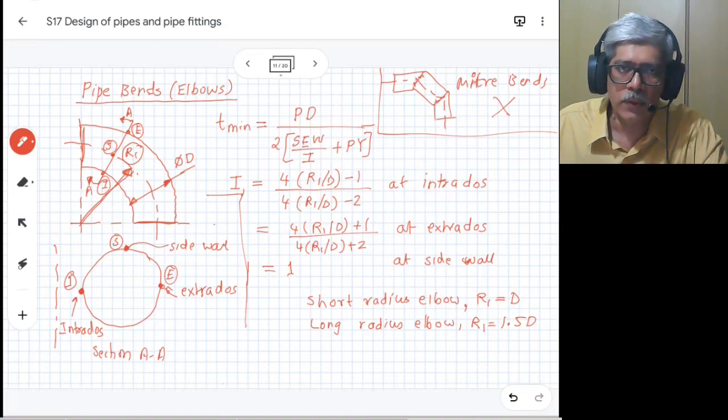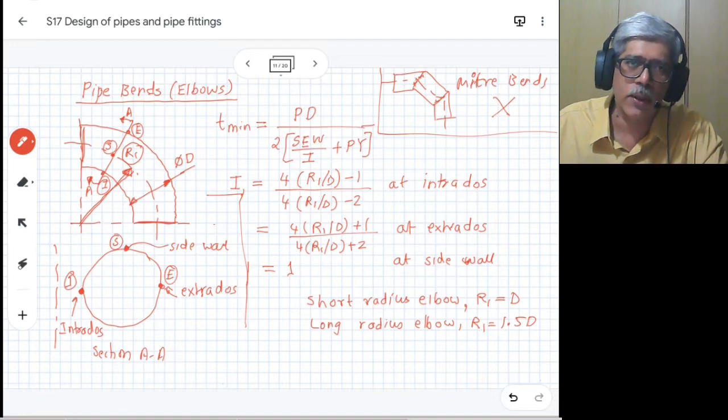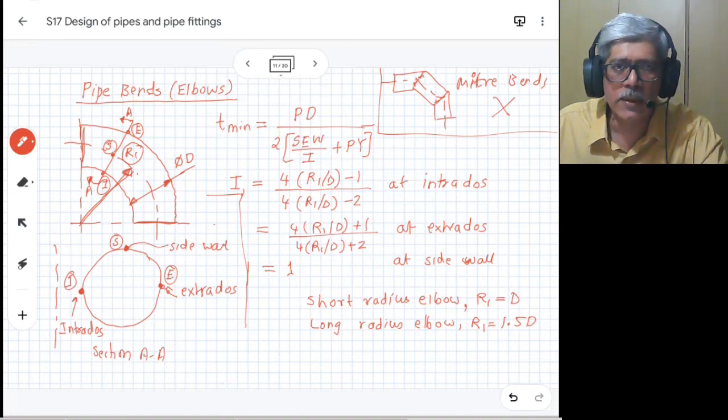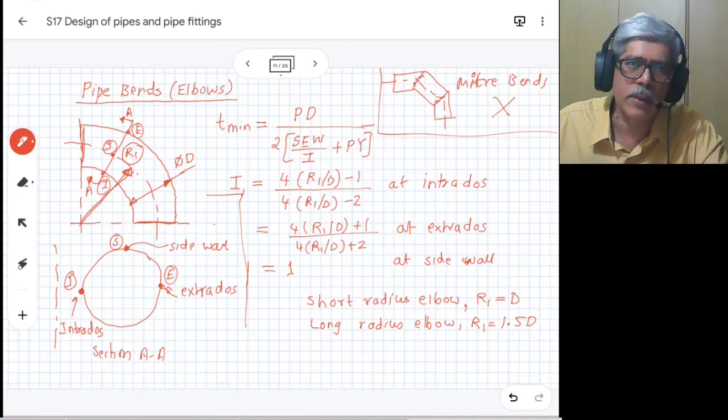The short radius elbow will have two costs associated with it: one is the required thickness will be more, and secondly, the flow losses in the flow will also be more because of the sharper change in the velocity.